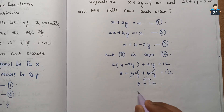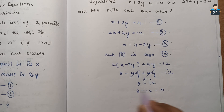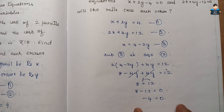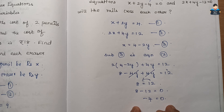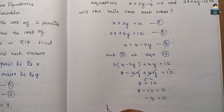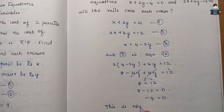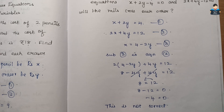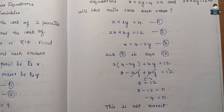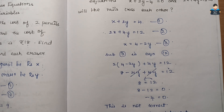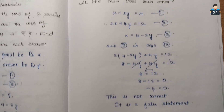We get 8 equals 12, which simplifies to 0 equals 4, or equivalently a false statement. This is not correct — it is a false statement. Therefore, the two rails will not cross each other.